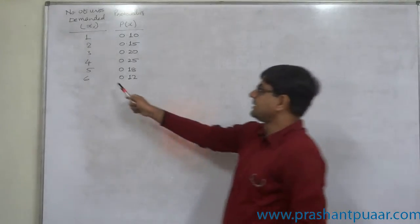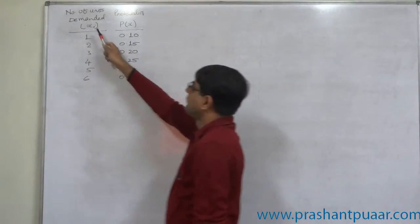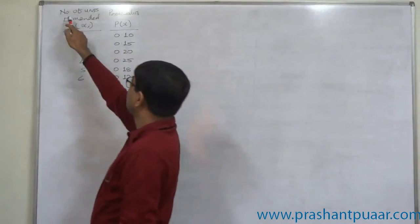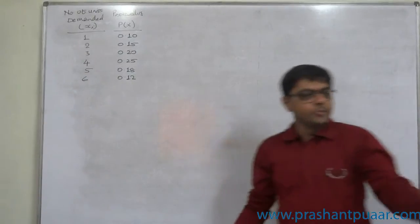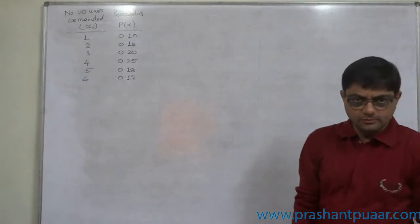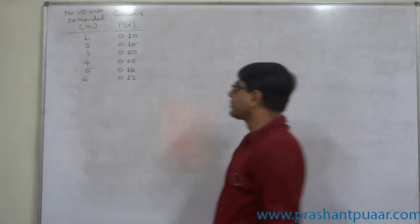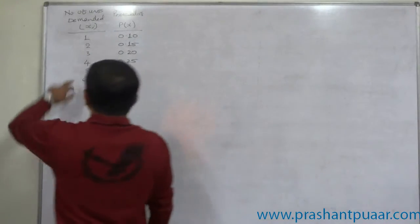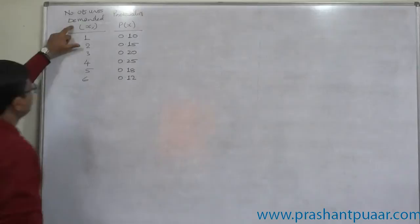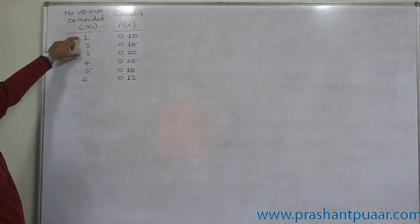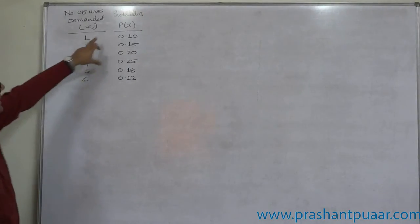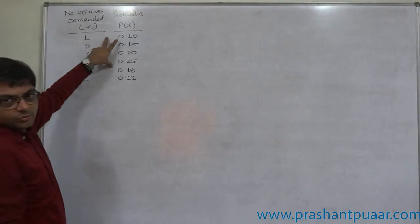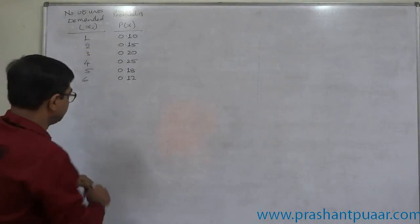In this new case, the data is for number of units demanded — say any product, you can assume any product. Number of units demanded ranges from 1 to 6 and the respective probabilities are given.